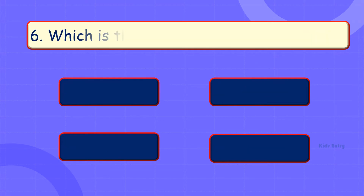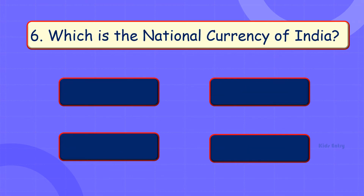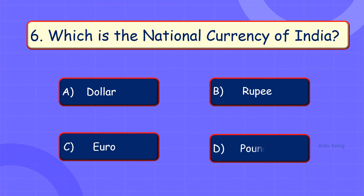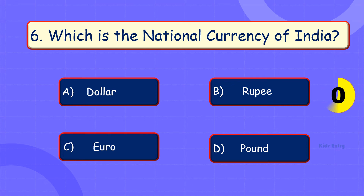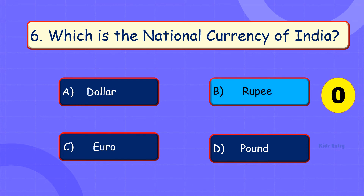Which is the national currency of India? A. Dollar. B. Rupee. C. Euro. D. Pound. Answer is Option B: Rupee.